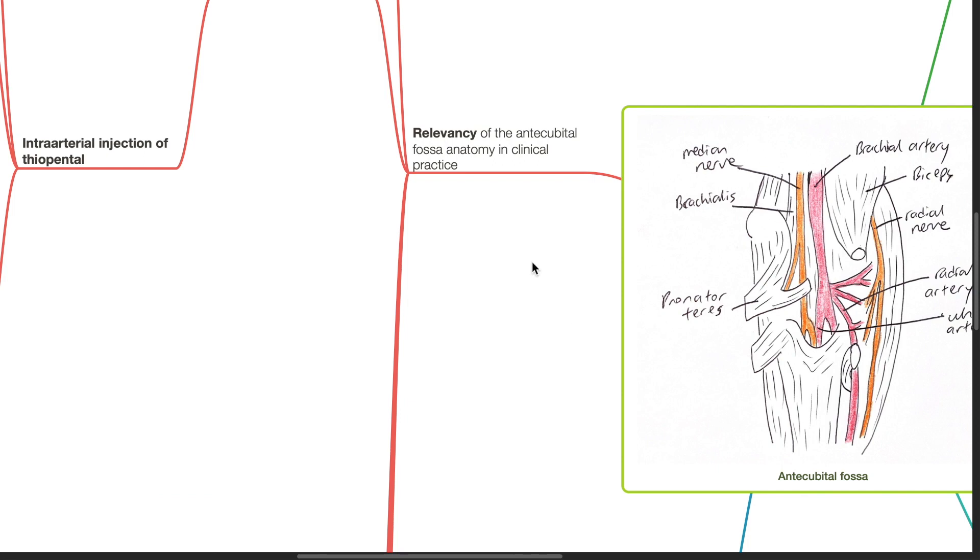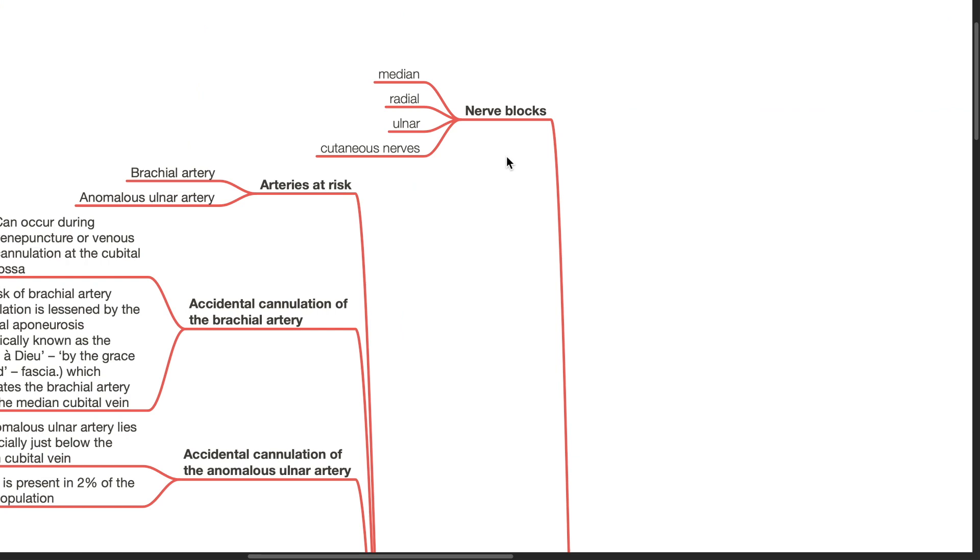Relevance of the anticubital fossa anatomy in clinical practice. It is relevant in nerve blocks such as the median, radial, ulnar and cutaneous nerves. A link to the relevant videos will be provided in the video description below.